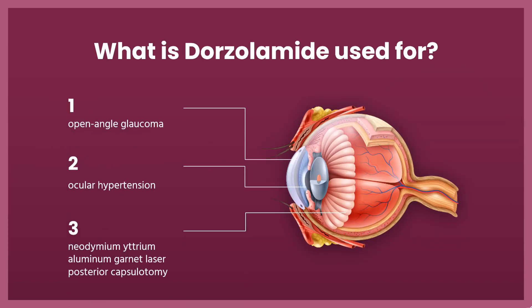What is dorzolamide used for? Dorzolamide is indicated for the management of elevated intraocular pressure in patients with ocular hypertension or open-angle glaucoma. It can also be used in combination with timolol for the same indication in patients who are insufficiently responsive to ophthalmic beta blockers. Its preoperative use was also investigated to prevent elevated intraocular pressure after neodymium yttrium aluminum garnet laser posterior capsulotomy.